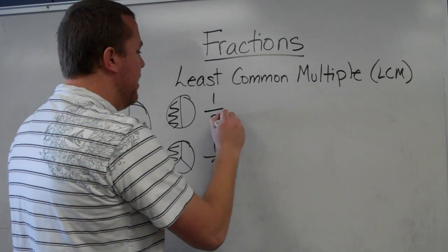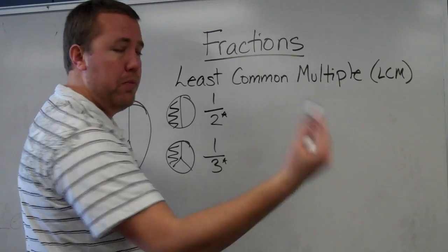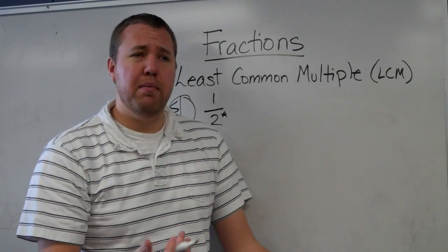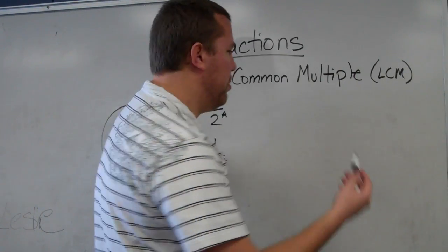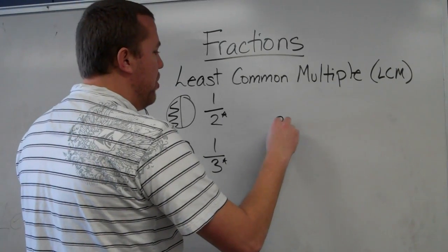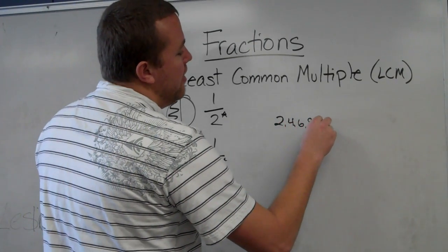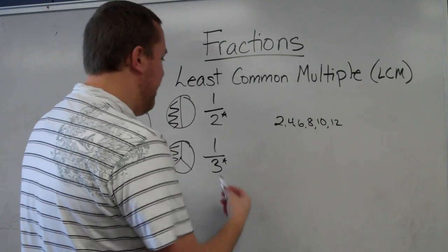So the first thing we do, we're looking at the denominators, and we need to list some multiples. My general rule of thumb, list about six multiples, and you'll be fine. So I have two, four, six, eight, ten, twelve. I'll just stop there.